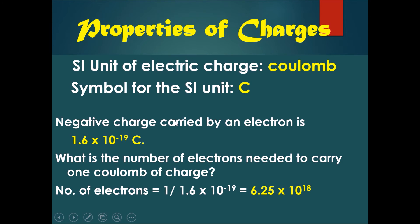Now let's talk about the properties of charges. The SI unit for the electric charge is called a coulomb, and the symbol for the SI unit is C. For example, one single electron has a negative charge of 1.6 times 10 to the power of minus 19 C.